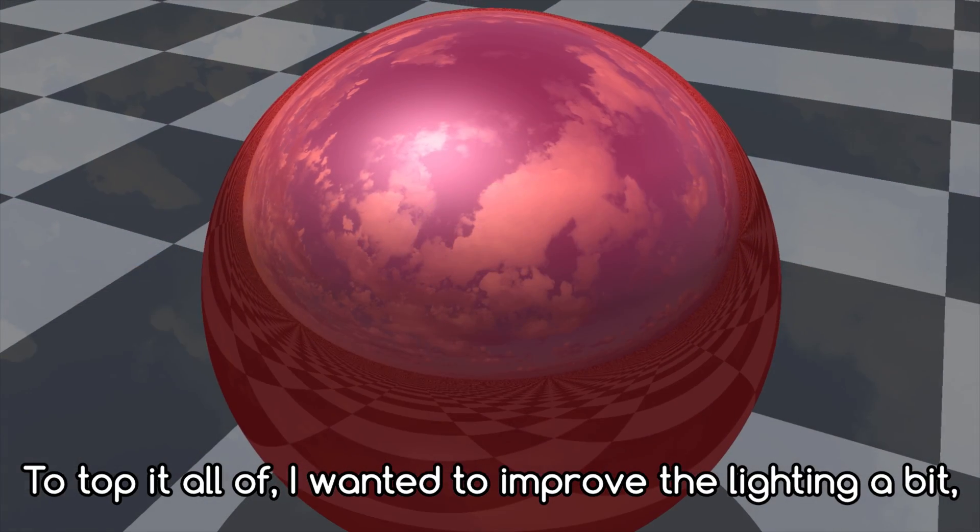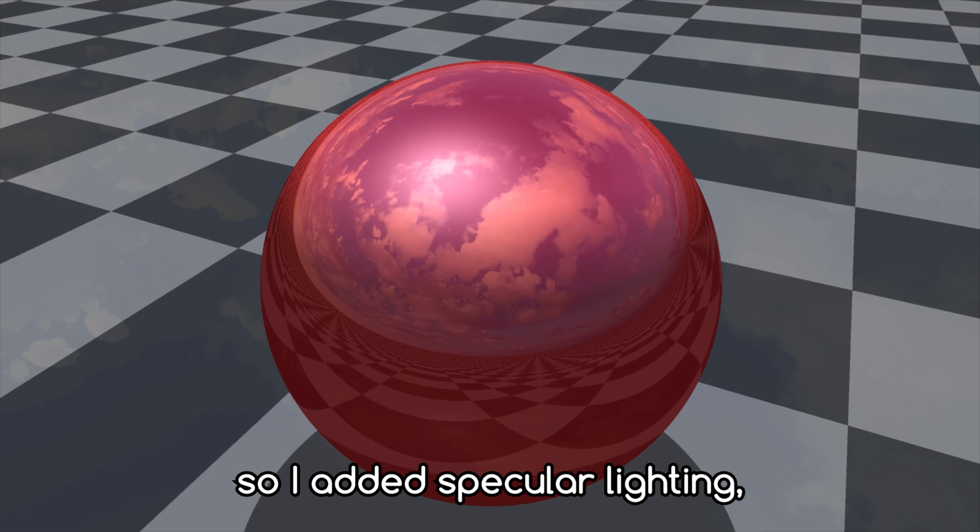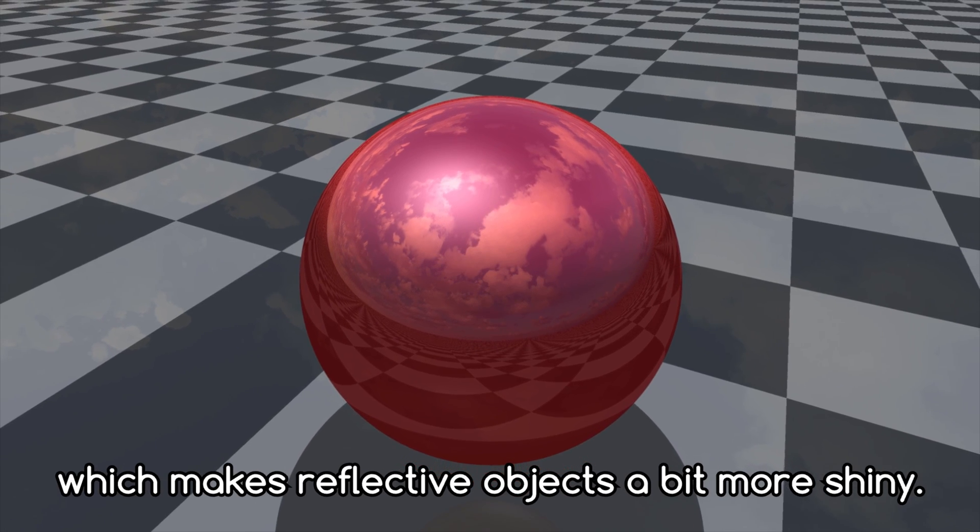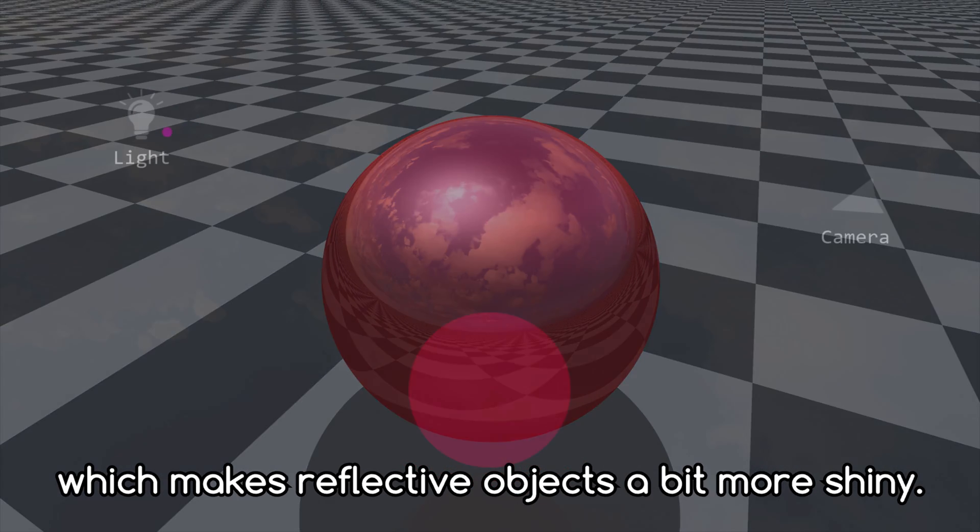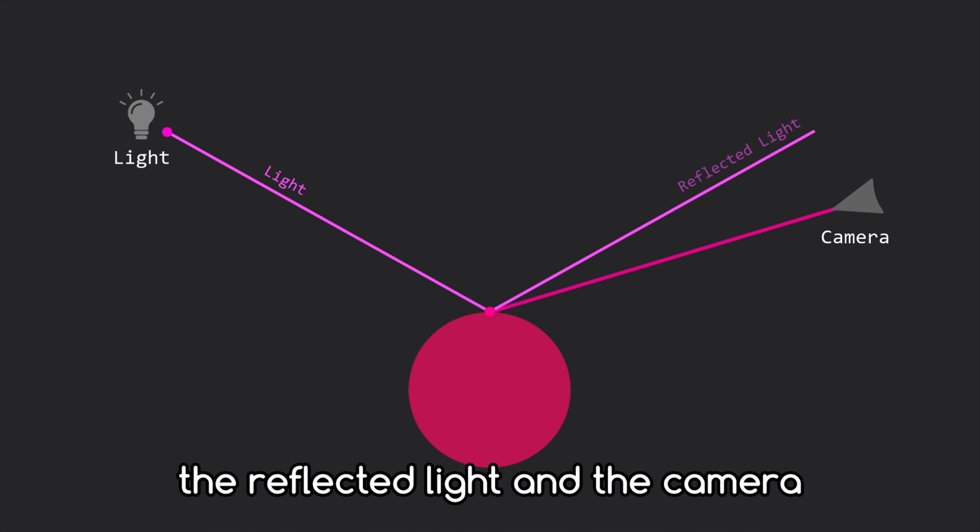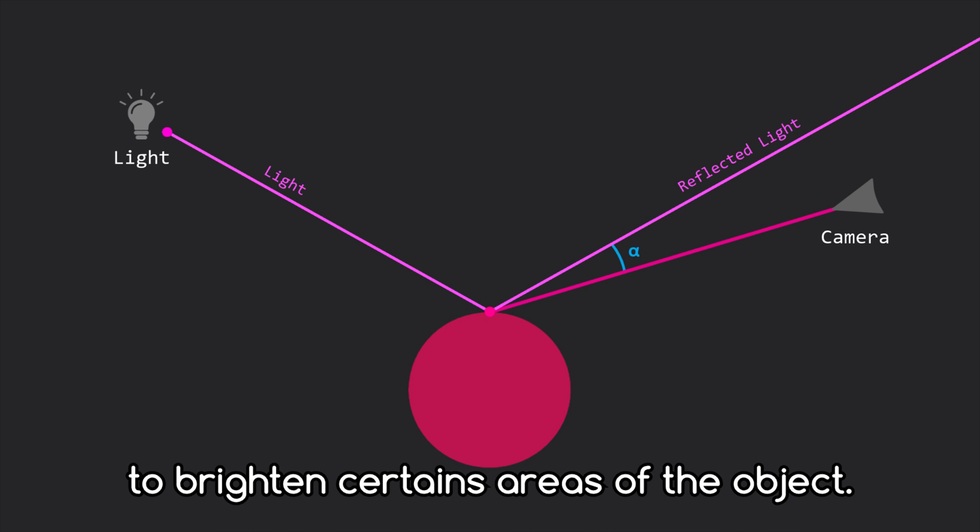To top it all off, I wanted to improve the lighting a bit, so I added specular lighting, which makes reflective objects a bit more shiny. This is achieved by using the angle between the reflected light and the camera to brighten certain areas of the object.